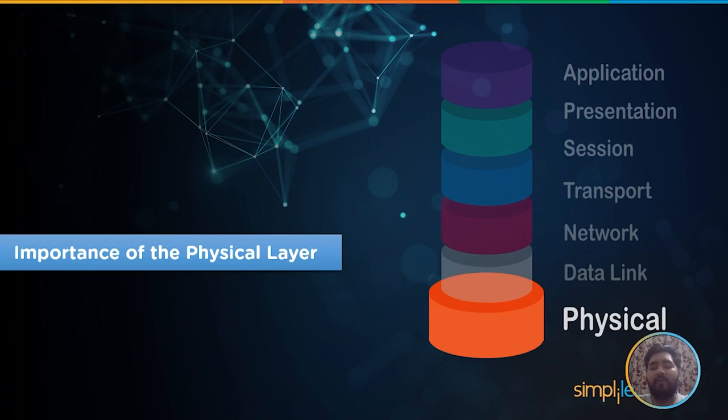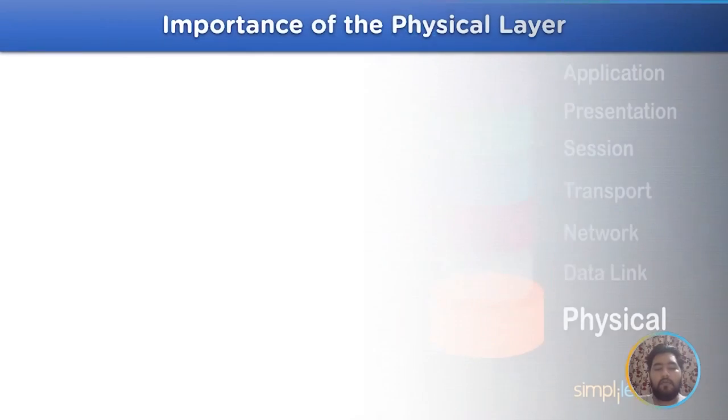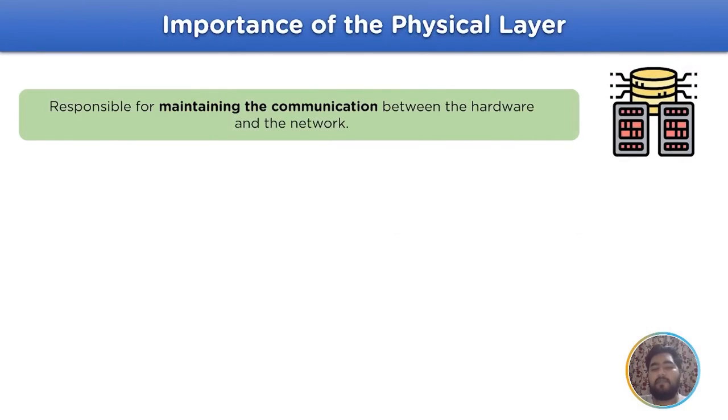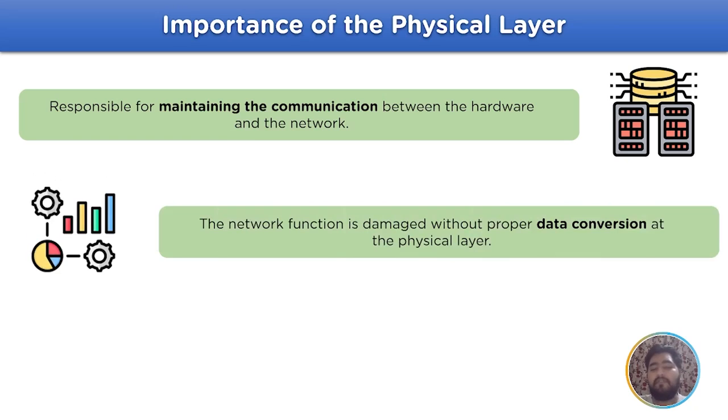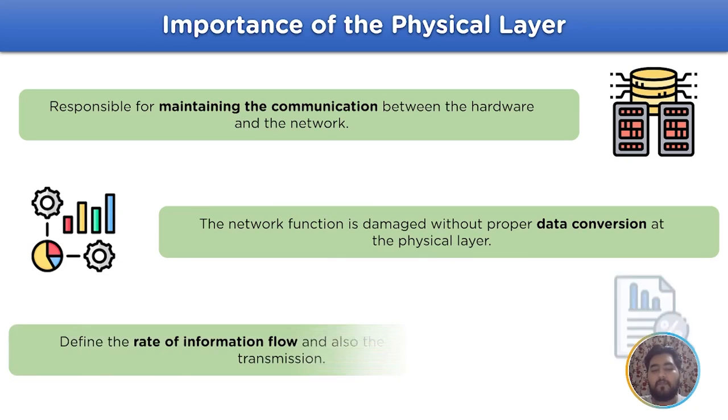Now let's move on to the last section that is importance of physical layer. The physical layer is responsible for maintaining the communication between the hardware and the network model. Without the physical layer, the conversion of data from upper layer will halt which leads to collapse of the communication model. It also handles data flow rate of the data being transmitted along with the time frame of the transmitted data.